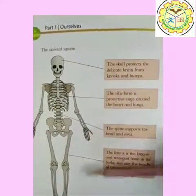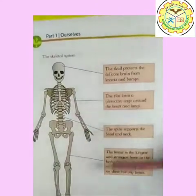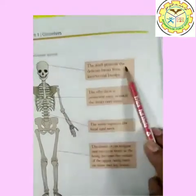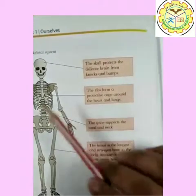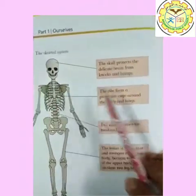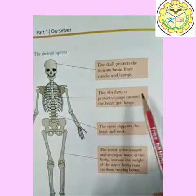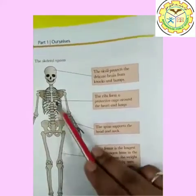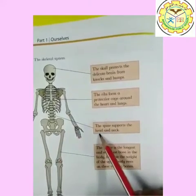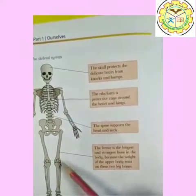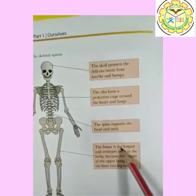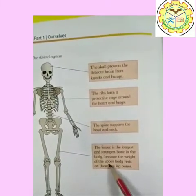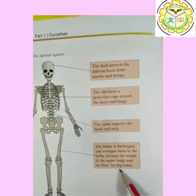Here, this picture shows the skeletal system of our body. The skull protects the delicate brain from knocks and bumps. The ribs form a protective cage around the heart and lungs. The spine supports the head and neck. And last is the femur. Femur is the longest and strongest bone in the body because the weight of the upper body rests on these two leg bones.